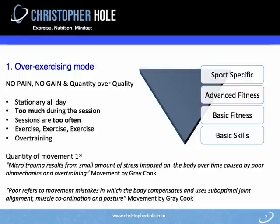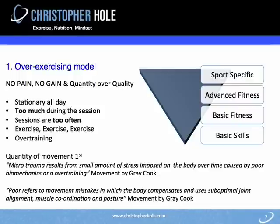We have to train in a different way. A second quote from Gray Cook refers to poor movement mistakes in which the body compensates, using sub-optimal joint alignment, muscle coordination, and posture — which again goes back to quality of movement. What we're doing is building quality of movement that puts joints in a better position so they don't accumulate micro traumas and small injuries over time. This is where basic skills and basic fitness come in.